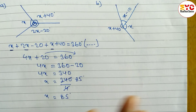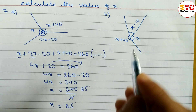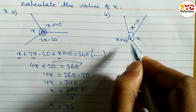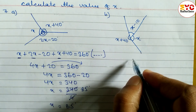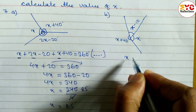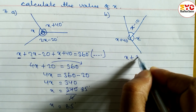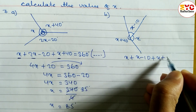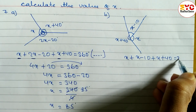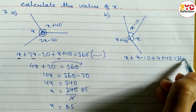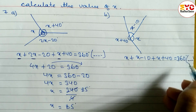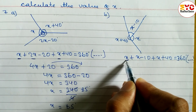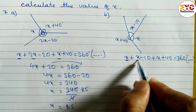Now look at question B. Here also the same concept applies — when you add all angles you get 360 degrees, being a complete turn. Let's add: x plus x minus 10 plus x plus 40 equals 360 degrees, the reason being a complete angle or complete turn.